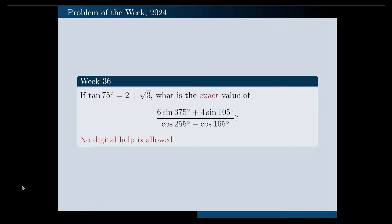Hello, in this video I'm going to solve the following problem. If tangent 75 degrees is equal to 2 plus square root of 3, what is the exact value of the following fraction: 6 times sine 375 degrees plus 4 times sine 105 degrees, all over cosine of 255 degrees minus cosine of 165 degrees?